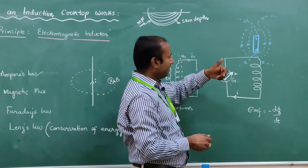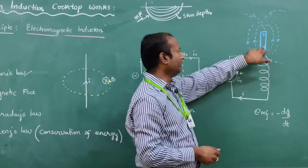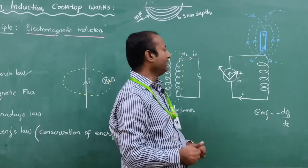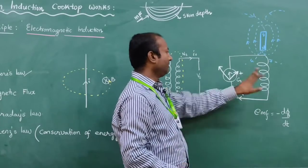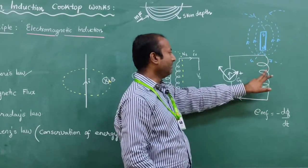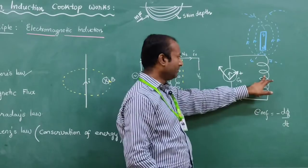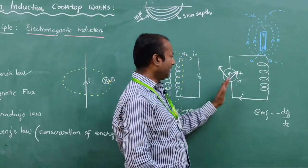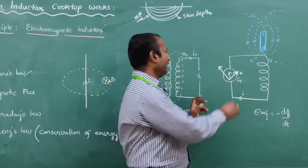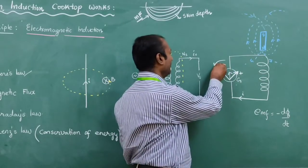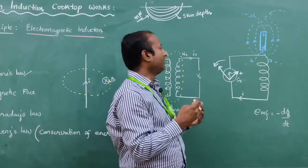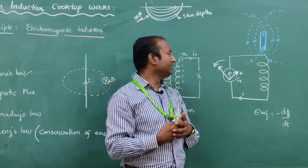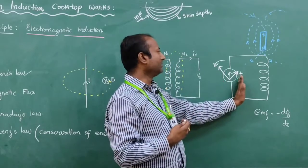If I change the magnet orientation from south to north to north to south and repeat the same process, the magnetic flux disturbs again. That change in magnetic flux produces the current. So that current deflects the galvanometer and moves in the opposite direction. This shows how fast the flux is changing with respect to the coil to produce the induced current.